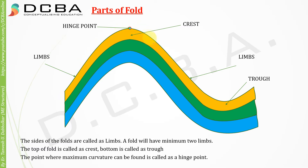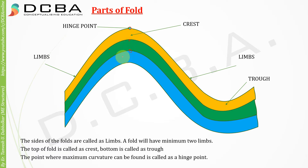This maximum curvature will vary for each bedding plane. For the outermost bedding plane, this is the hinge point; for the inner bedding plane, this would be the hinge point; and for the next bedding plane, this would be the hinge point, and so on.